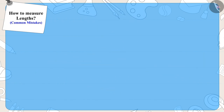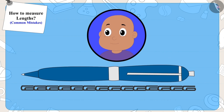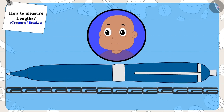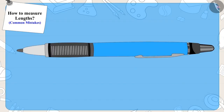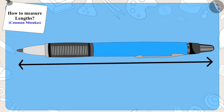On the other hand, while measuring his pen, Bablu placed the clips in a straight line without leaving any space in between. That is why the length of his pen came out to be 14 clips. Bablu's method was the correct one.